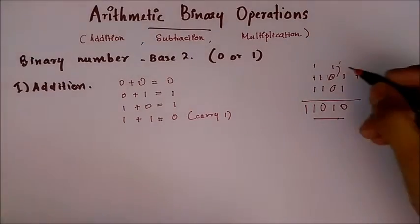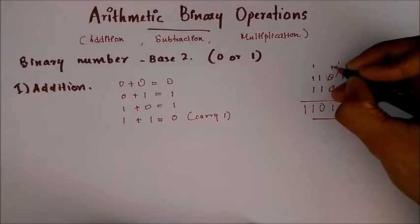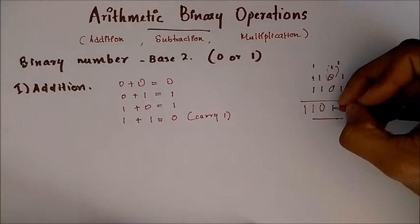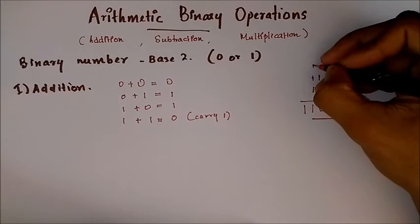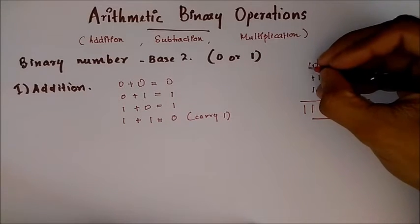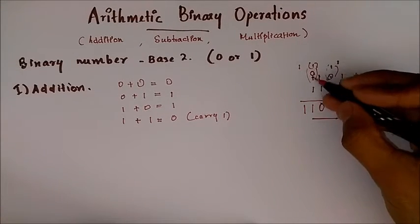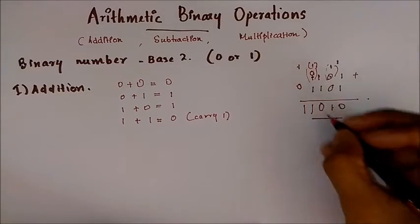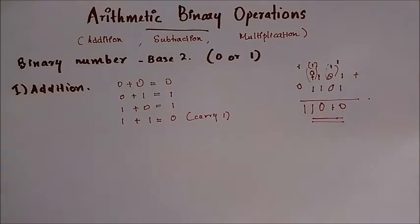So going over it once more: we have 1 plus 1, that is 0 with a carry 1. This 1 plus 0 gives 1, which is added to 0 again giving 1. In the third column we add 1 plus 1, we get 0 with a carry 1. This 1 plus this 1 gives 0, combined 0 with a carry 1. That 0 plus 1 gives 1, and 1 plus nothing is 1. So this is binary addition. Next is binary subtraction.